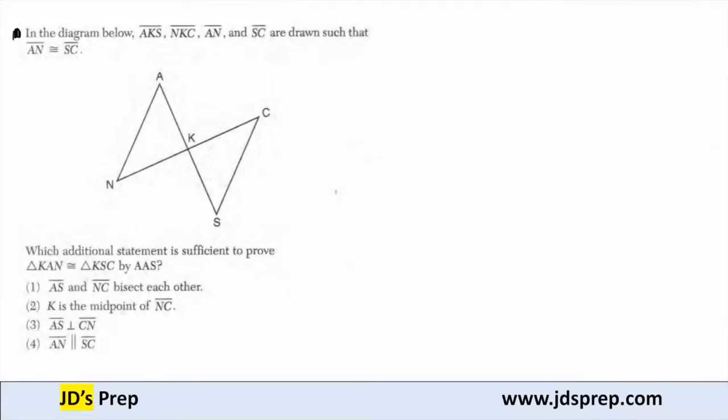Welcome to JD's prep. In this example, the diagram below shows AKS, NKC, AN, and SC are drawn such that AN is congruent to SC. So we already know that these two sides are congruent.